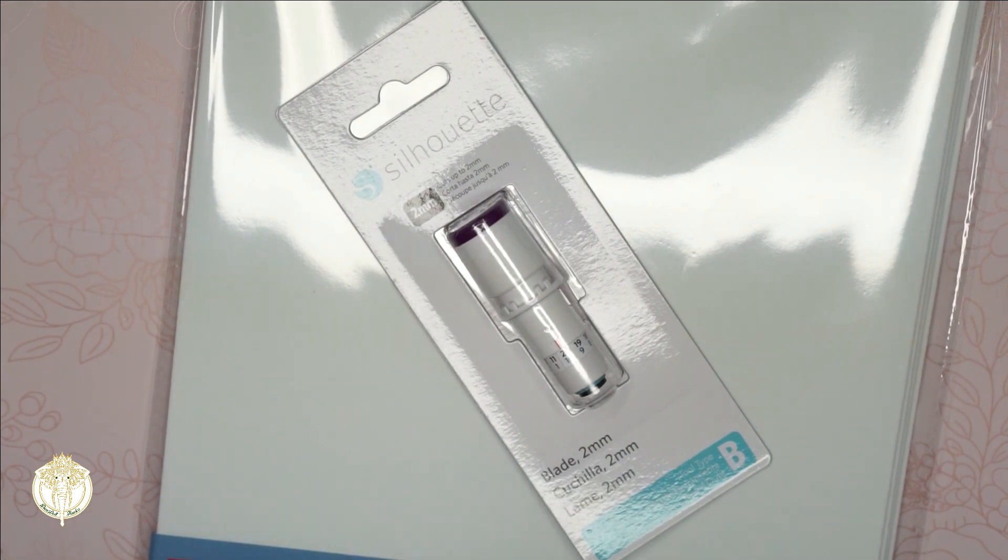Now we all know that the Cameo 4 and Portrait 3 come with the Auto Blade but these new blades are actually manual blades. I do have the others and I'll try those out in future videos. This is a tool type B so it has the bigger body and it has the auto detection inside of it.